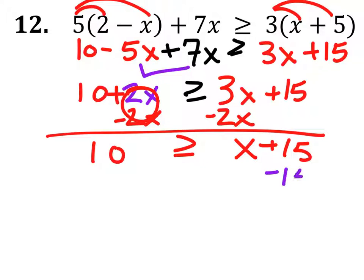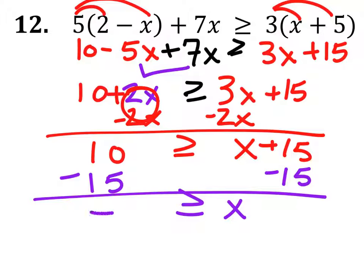Then we would subtract 15 from both sides. 10 minus 15 is negative 5.